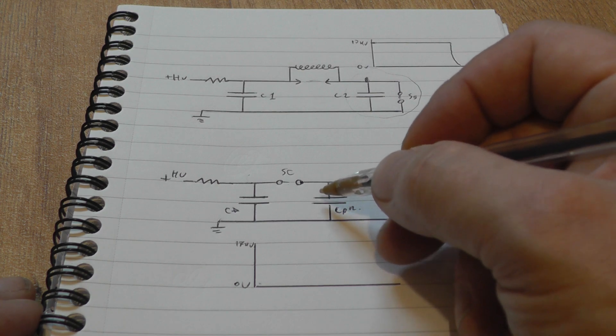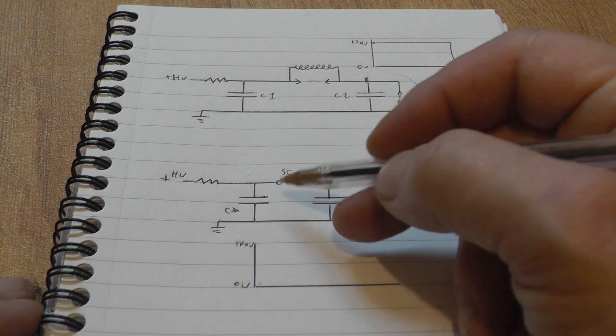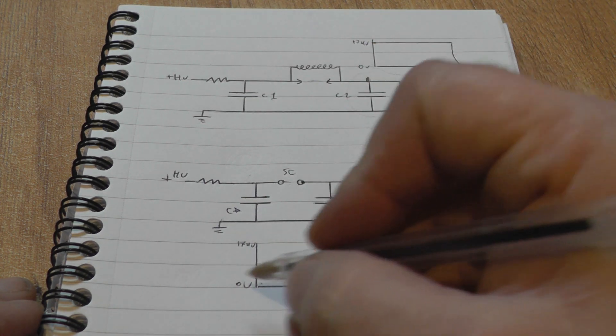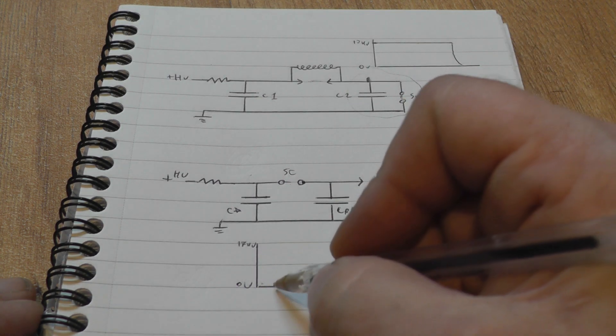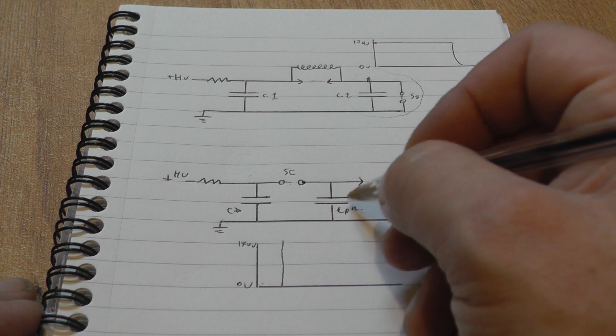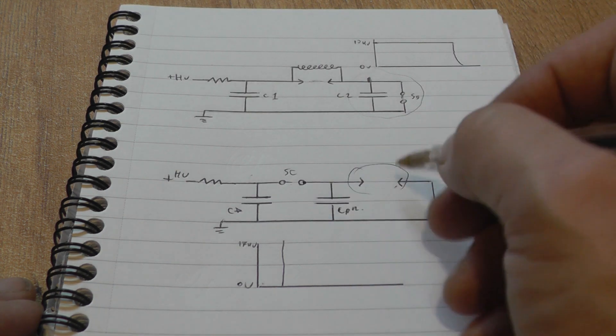The idea is if we make the peaking capacitor small enough, we can get a massive or very steep rise time. It's transferring charge from one side of the circuit to the other. In our voltage-time diagram here, we'd expect a sudden abrupt change on the peaking capacitor, which would basically set up the channel for lasing. Lasing would occur maybe a nanosecond or so later.